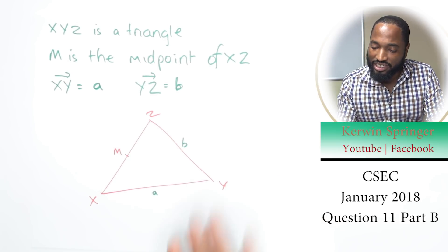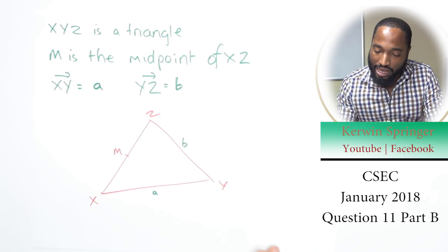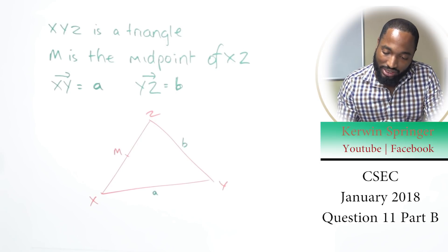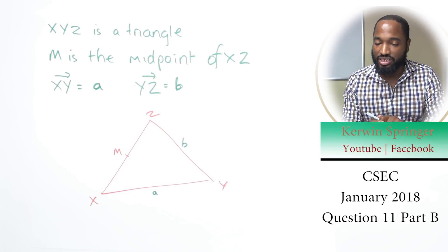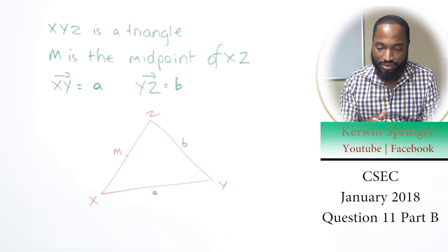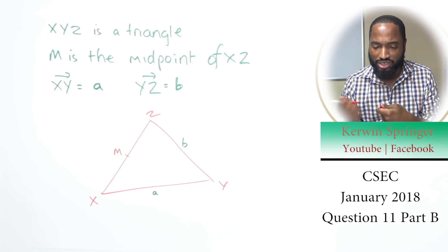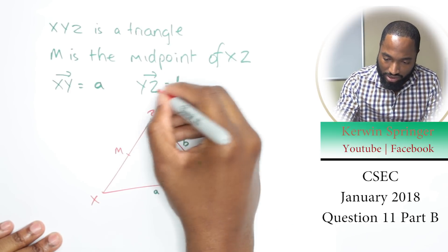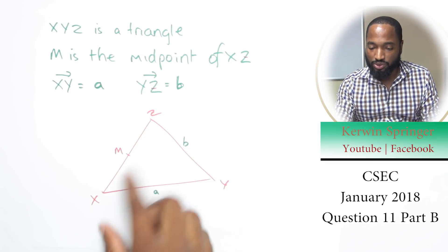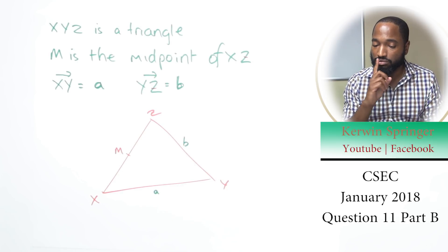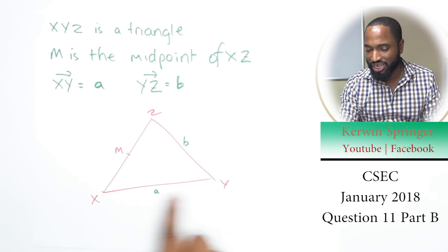This is the data that was given. The first thing we were asked to do is express XZ in terms of a and b. This Z is looking a little funny, like a two, so you can just put a slash through the Z so you know it's Z. Expressing XZ in terms of a and b is kind of simple—vectors follow the pathway.